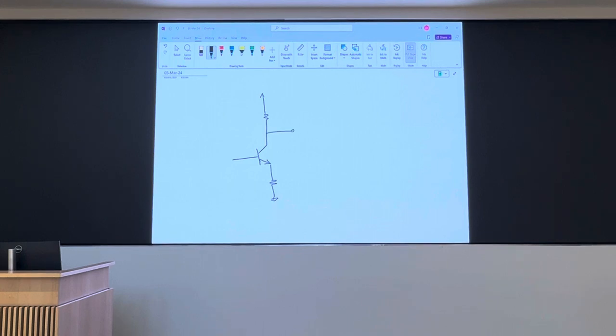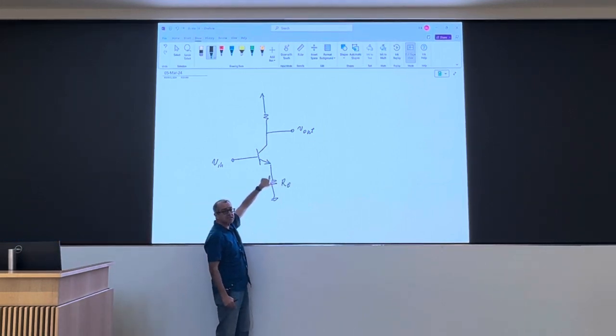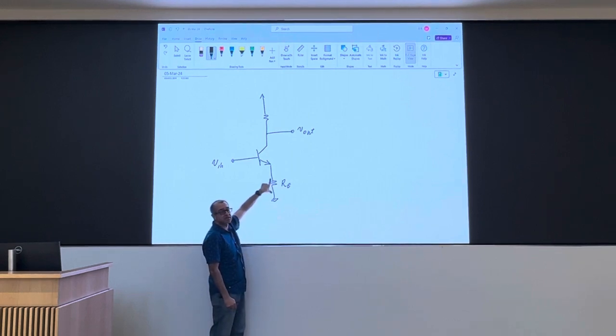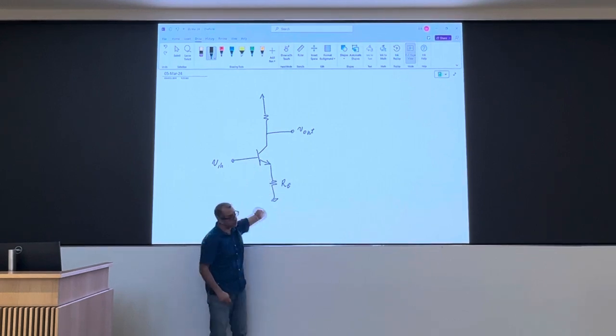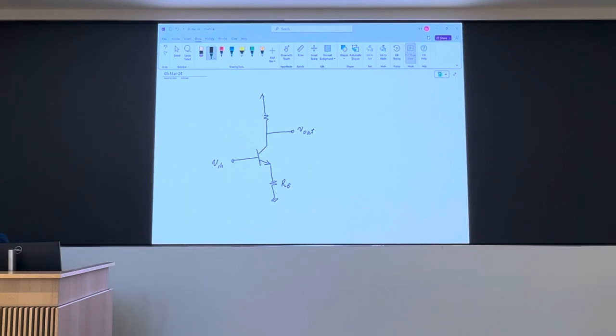A basic common emitter amplifier is like this. You apply the input to the base, take the output from the collector. Emitter is usually either grounded or only has a small emitter resistance. So, this emitter resistance compared to RC on top is usually very small. Right? This is your core stage.